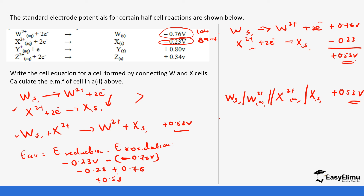That brings us to the end. I hope you've been able to see how to calculate the EMF of a cell using two different methods — using the formula and also using the reverse equations. Either way, you still get the same answer. This is a very common question. Previously we discussed how to identify oxidizing agents and reducing agents, which often forms part of the same question. In the next lesson, we are going to look at how standard electrode potentials help us determine if a reaction occurs or doesn't occur. See you in the next lesson.